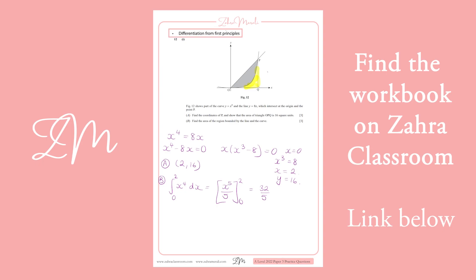And I want to take that away from the triangle, which this length here is 2, and that's 16. So, half of 2 is 1, 1 times 16 is 16. So, I'm doing 16 minus 32 over 5. And so, the area equals 9.6 square units.